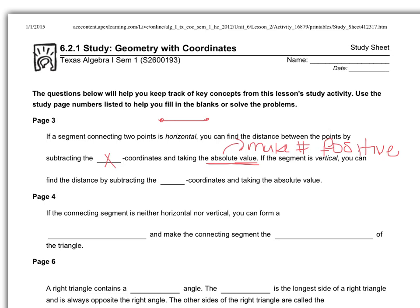So if your segment was vertical, so if instead of being horizontal it was a vertical line, we would be able to find the length of that segment by subtracting the y coordinates and again taking the absolute value, just making it positive.